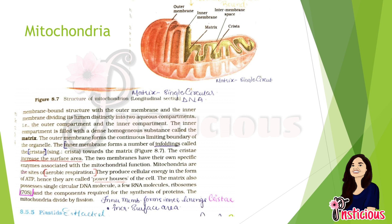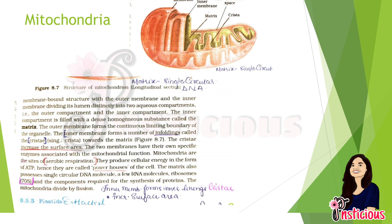The two membranes have their own specific enzymes associated with mitochondrial function. Mitochondria are the site of aerobic respiration, which is why they are called the powerhouse of the cell. The matrix also possesses single circular DNA, a few RNA molecules, and ribosomes of the 70S unit, made of two subunits — 50S and 30S. Components required for protein synthesis are also present. Mitochondria divide by fission.